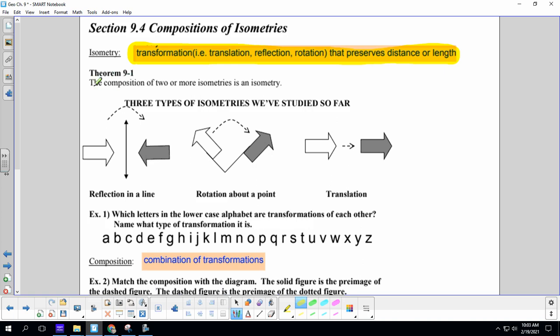Theorem 9.1, the composition of two or more isometries is an isometry. So if you do a translation or a reflection, you translate it and reflect it, you'll still have an isometry at the end. It'll still be the same shape, no matter how many of these in a row that you do.